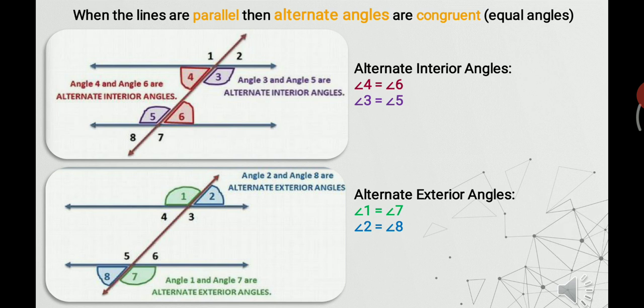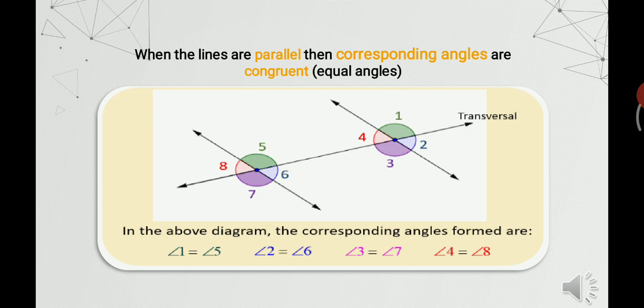When the lines are parallel, the pair of alternate interior angles and the pair of alternate exterior angles are equal. For example, angle 4 and angle 6 form a pair of alternate interior angles, and since the lines are parallel, these angles are equal. Similarly, angle 1 and angle 7 form a pair of alternate exterior angles and they are equal as well. For corresponding angles, when the lines are parallel, the pair of corresponding angles is always equal. Angle 1 and angle 5 form a pair of corresponding angles so they are equal, and similarly all other pairs of corresponding angles are also equal.